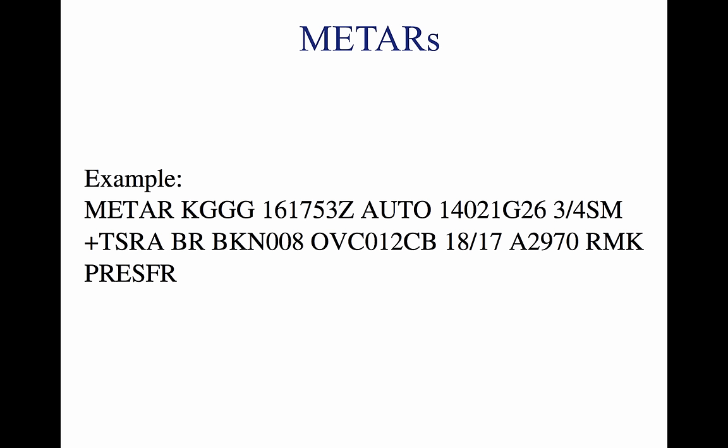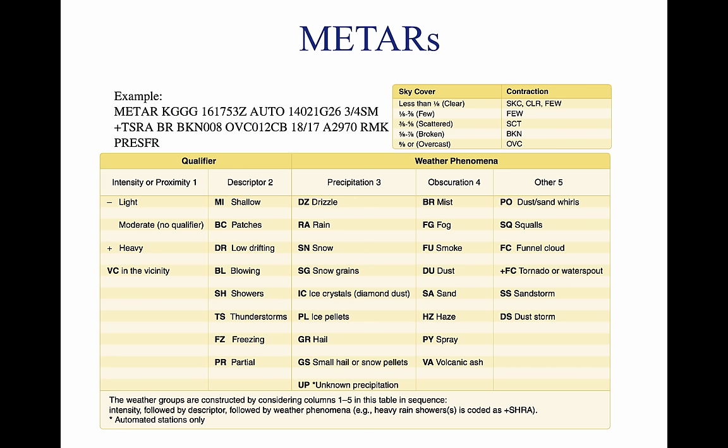5. Wind — 14021G26, reported with a five-digit code unless the speed is over 99 knots. The first three digits indicate the direction the true wind is blowing in tens of degrees. If the wind is variable, it is reported as VRB. The last two digits indicate the speed of the wind in knots. If the winds are gusting, the letter G follows the wind speed, then the peak gust recorded. 6. Visibility — 3/4 SM. The prevailing visibility is reported in statute miles (SM) in both miles and fractions of miles. Runway visual range (RVR) is sometimes reported following prevailing visibility and is the distance a pilot can see down the runway in a moving aircraft.